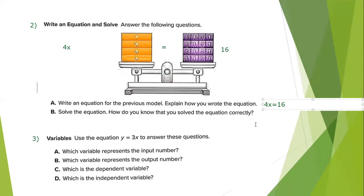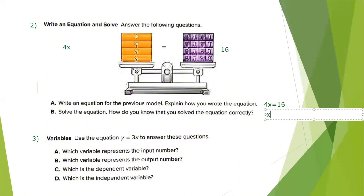In part B, solve the equation. The value of 4 boxes equals 16. To get the value of 1 box, divide both sides by 4. 4x divided by 4 equals x. 16 divided by 4 equals 4. To check: substitute x equals 4, so 4 plus 4 plus 4 plus 4 equals 16. 16 equals 16. Correct!